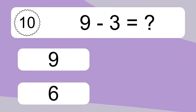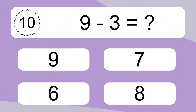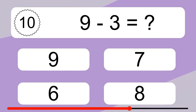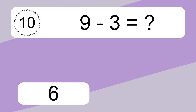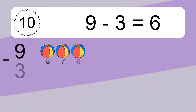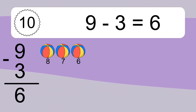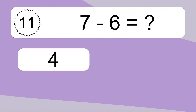9 minus 3 equals what? 9 minus 3 equals 6. Let's count it: 8, 7, 6.